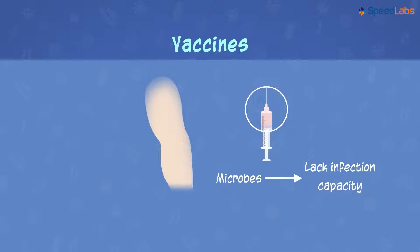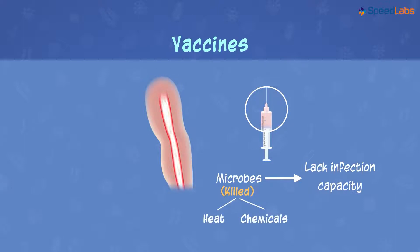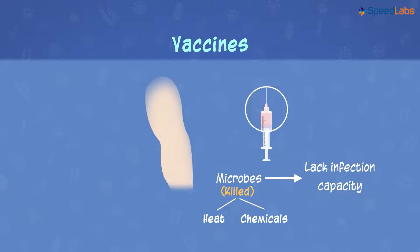This is made sure by killing the microbes with heat or chemicals. This prepares our immune system to design a strategy for killing the microbes, and the same strategy can be used later when the body encounters the live microorganisms. This gets us to the first usefulness of microbes — they help us in preparing vaccines.